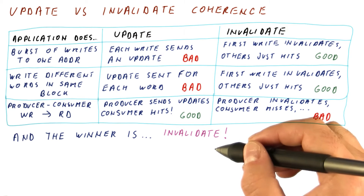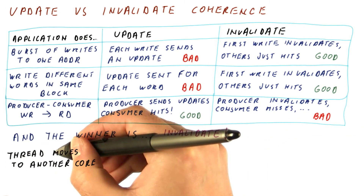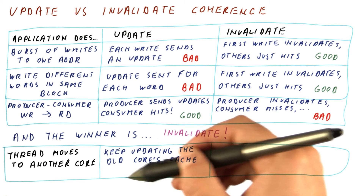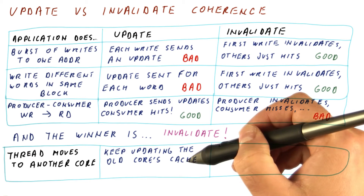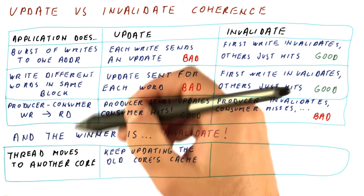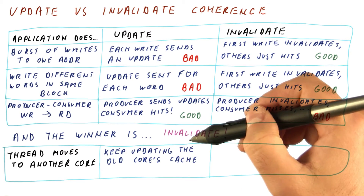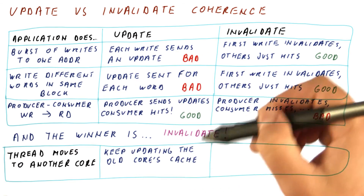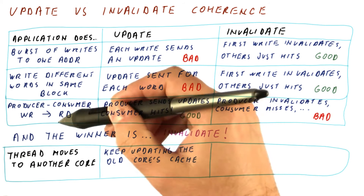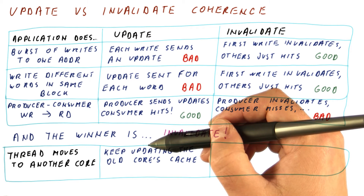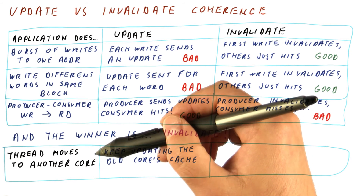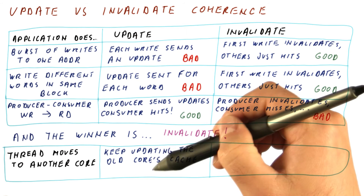What really makes invalidate win with no contest is when a thread moves to another core. When the operating system decides to move a thread to another core, the update protocol keeps updating the old core's cache. Our working set was in one cache but moved to another, yet the old cache still has blocks corresponding to our data. So all the writes in the near future end up updating the other core's cache until that cache replaces those blocks. This is pretty horrible, because ideally we would just move the data over and continue working privately on our private data.